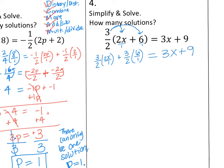3 times 2x is 6x. 2 times 1 is 2. 3 times 6 is 18. 2 times 1 is 2. And that still equals 3x plus 9. 2 goes into 18, 9 times. 2 goes into 6x, 3x times. It goes to 3x plus 9.